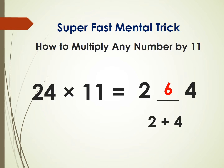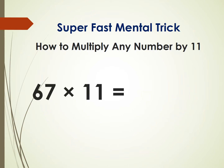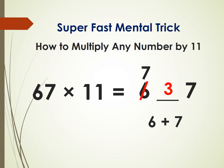Now let's take a look at another example. I want to multiply 67 by 11. Write 6 and 7, and provide a space for one more digit. Add 6 and 7, you get 13 — write 3 and carry 1 to the next digit, so it becomes 737.